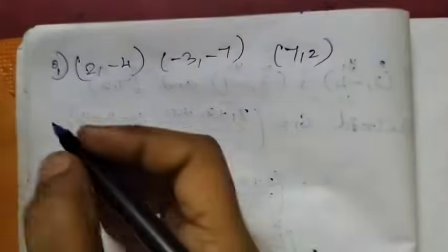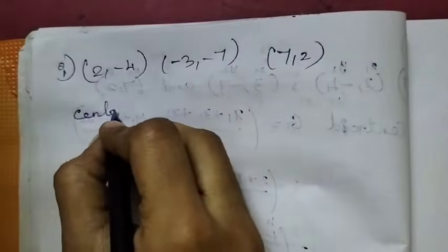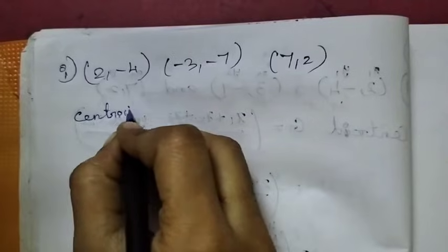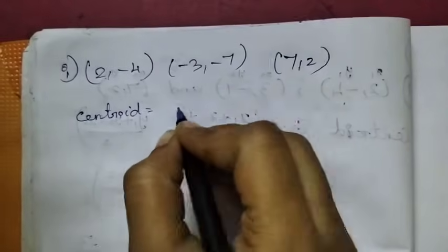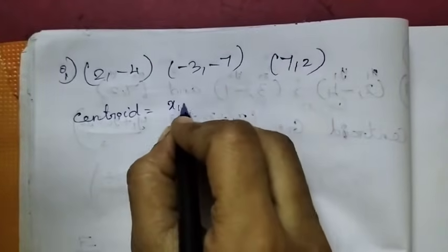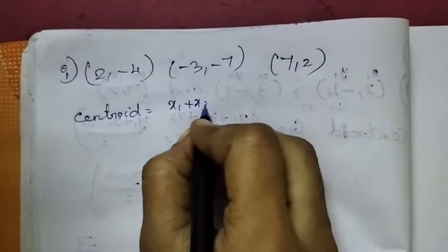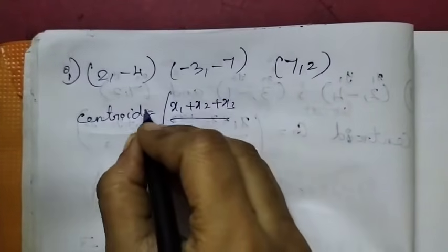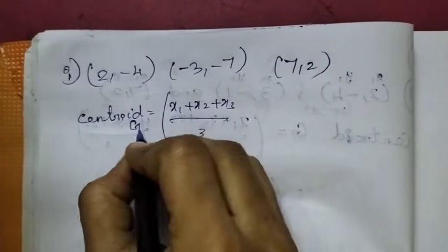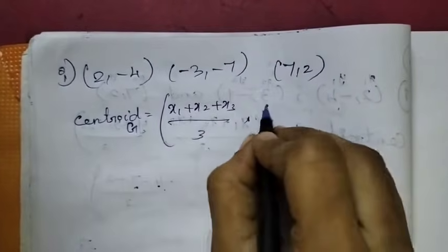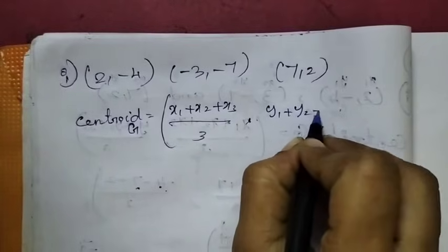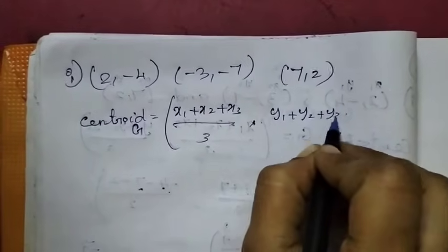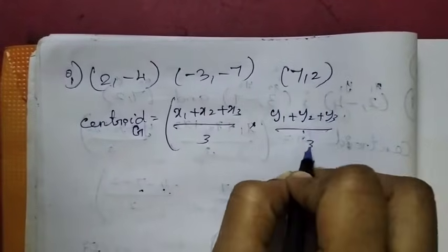We know the centroid formula. Now we find out the centroid formula: x1 plus x2 plus x3 by 3, and y1 plus y2 plus y3 by 3.